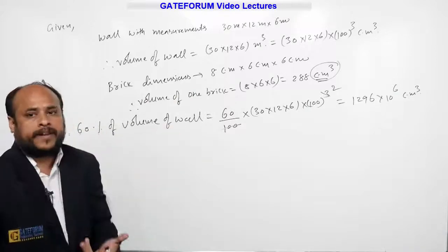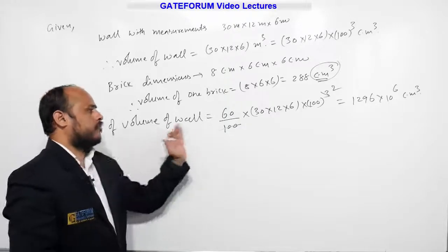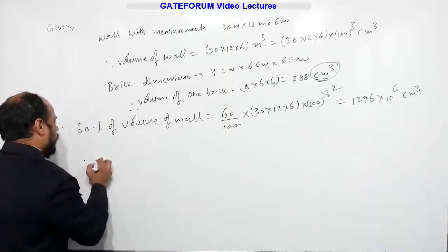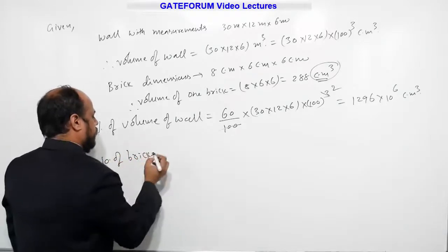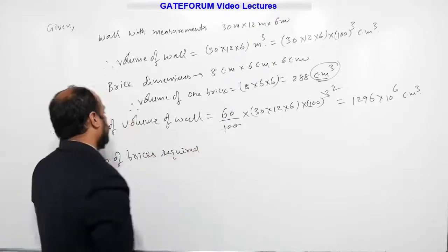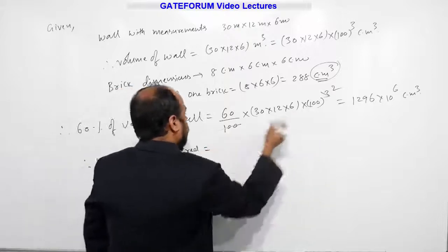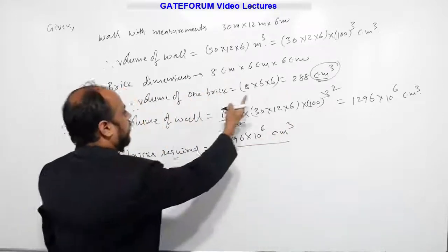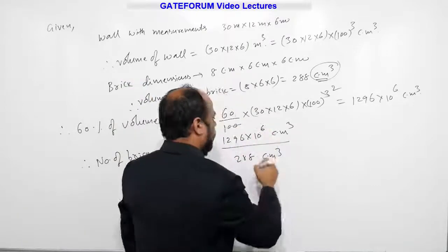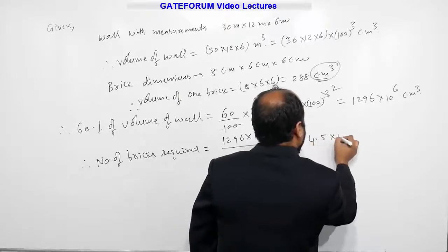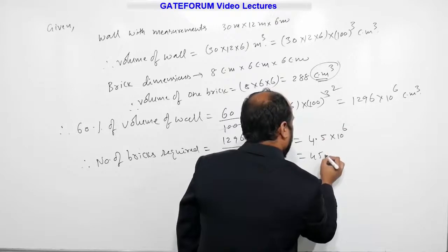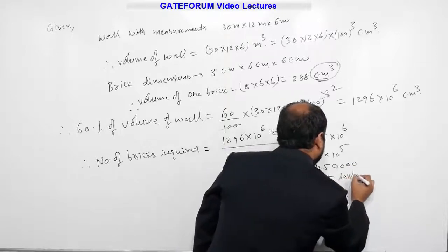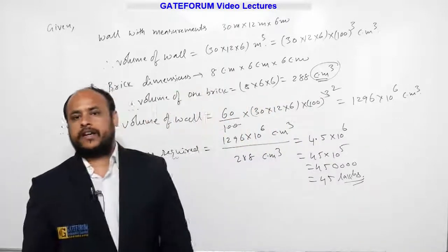This 60 percent of volume of wall consists of how many bricks? To calculate, divide the 60 percent wall volume by the volume of one brick. Therefore, number of bricks required to construct 60 percent of the wall is 1296 into 10 power 6 centimeter cube divided by 288 centimeter cube, which equals 4.5 into 10 power 6, that is 45 lakhs. So the right option is Option A.